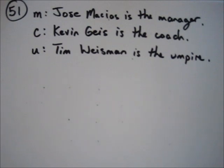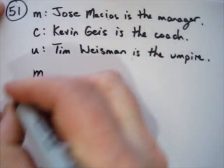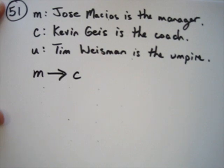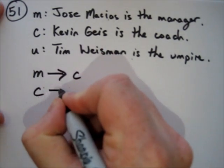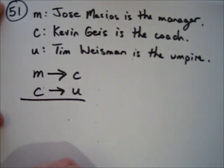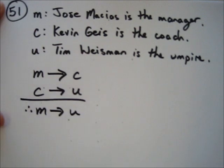Now I'm going to translate the English in the book to a logical argument. The first statement, 'if Jose Macias is the manager, then Kevin Geis is the coach,' becomes if M, then C. Second proposition: if C, then U. And the conclusion is: therefore if M, then U.